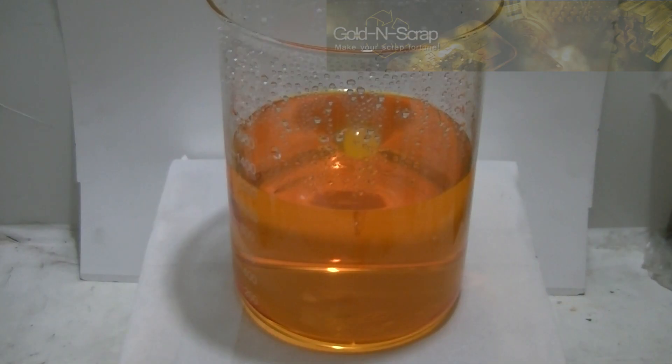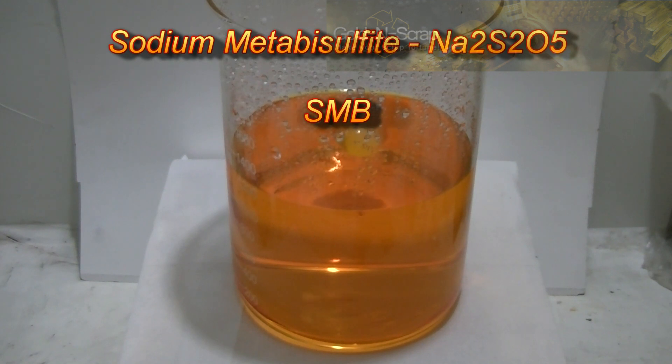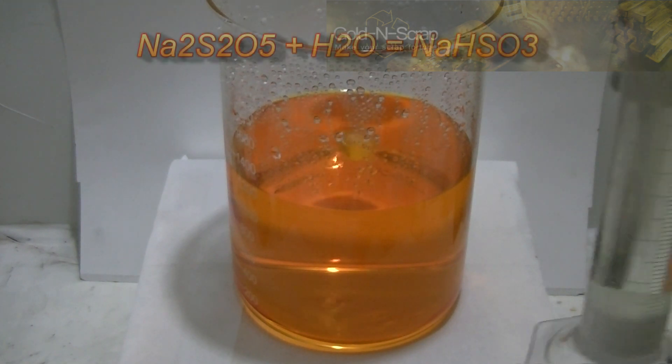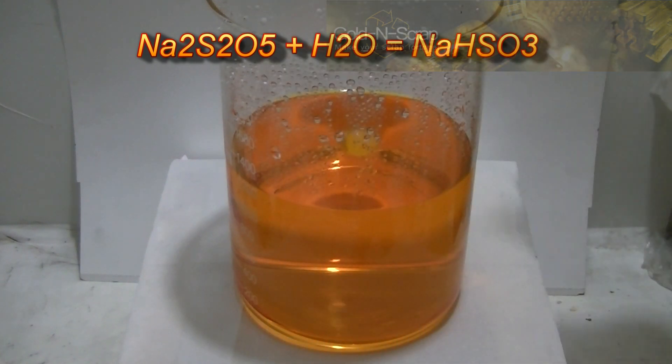Our next step is to remove the gold from the solution. This is done by using sodium metabisulfite, or in short, SMB.